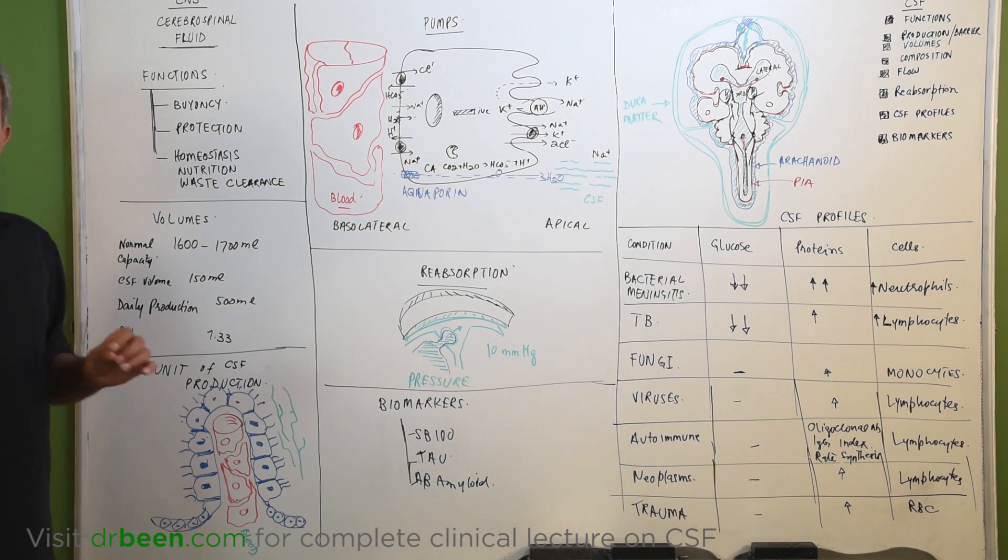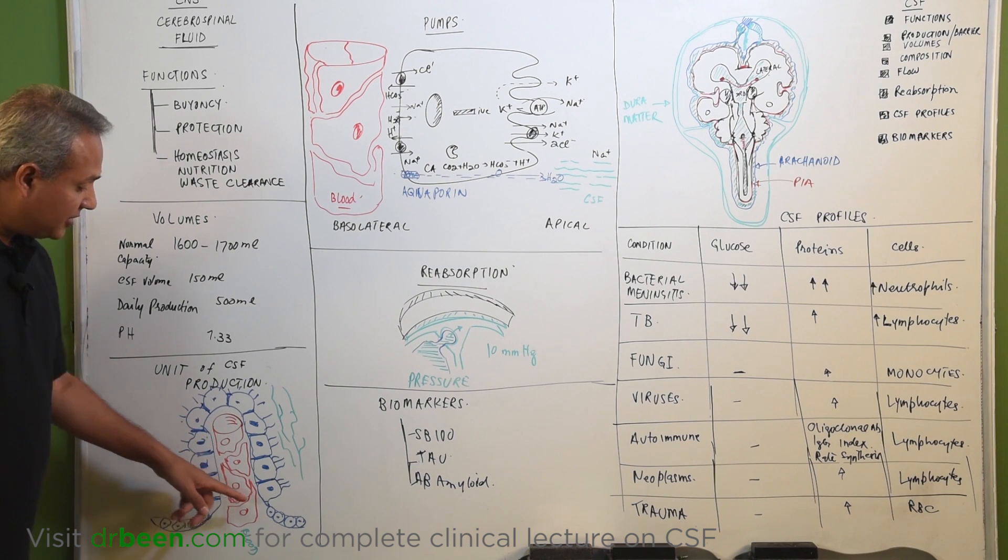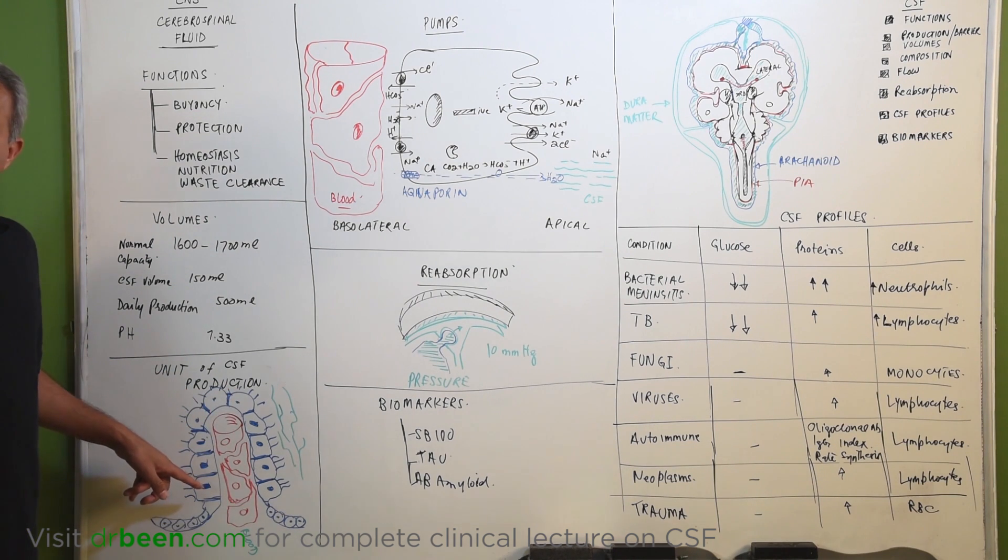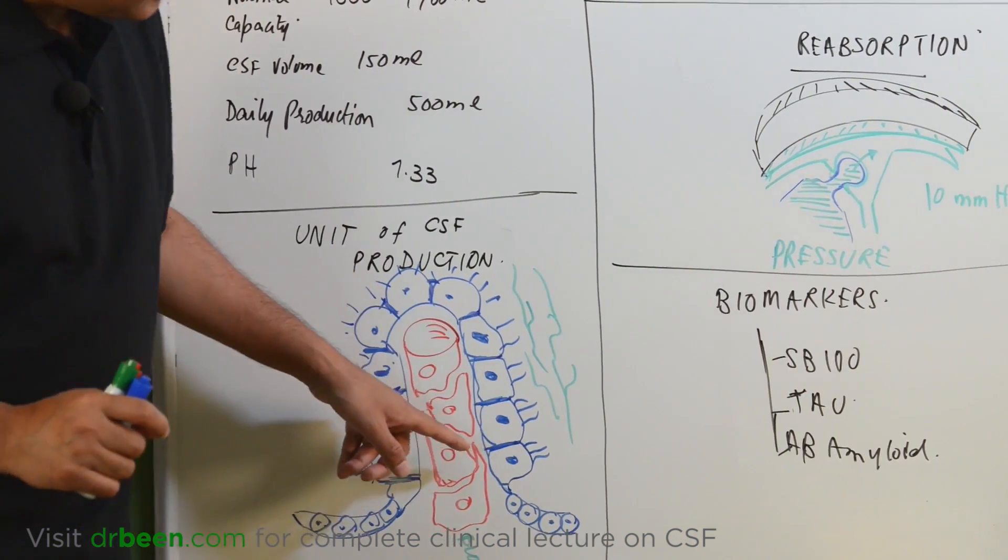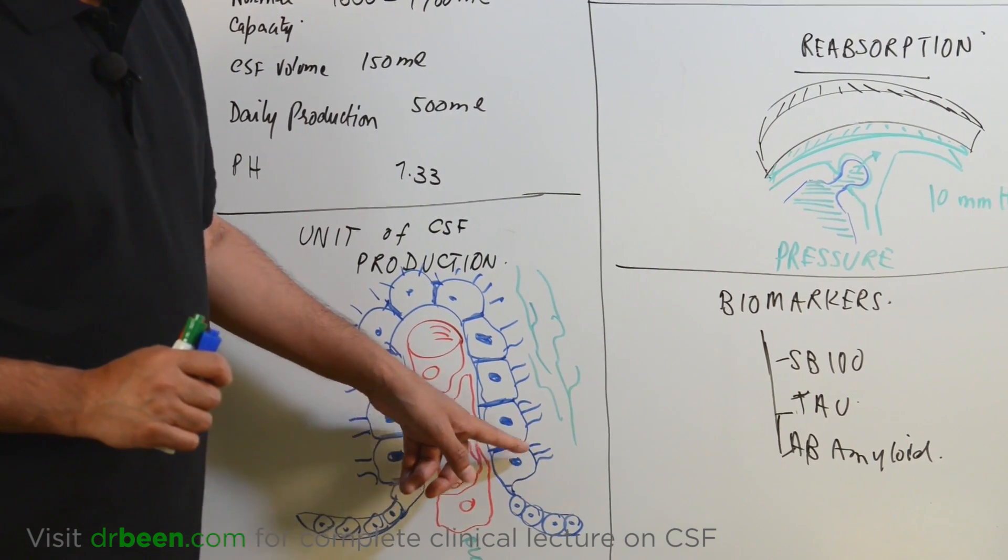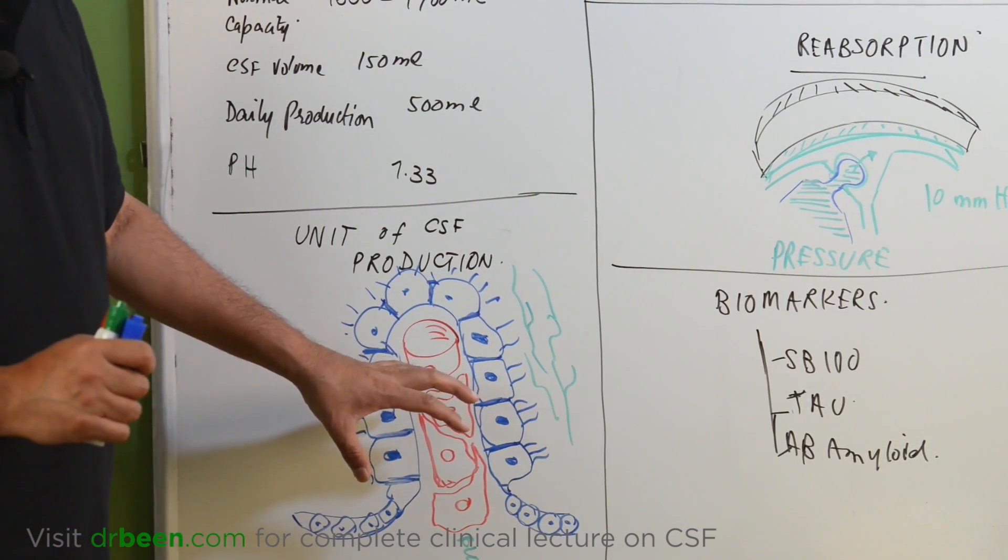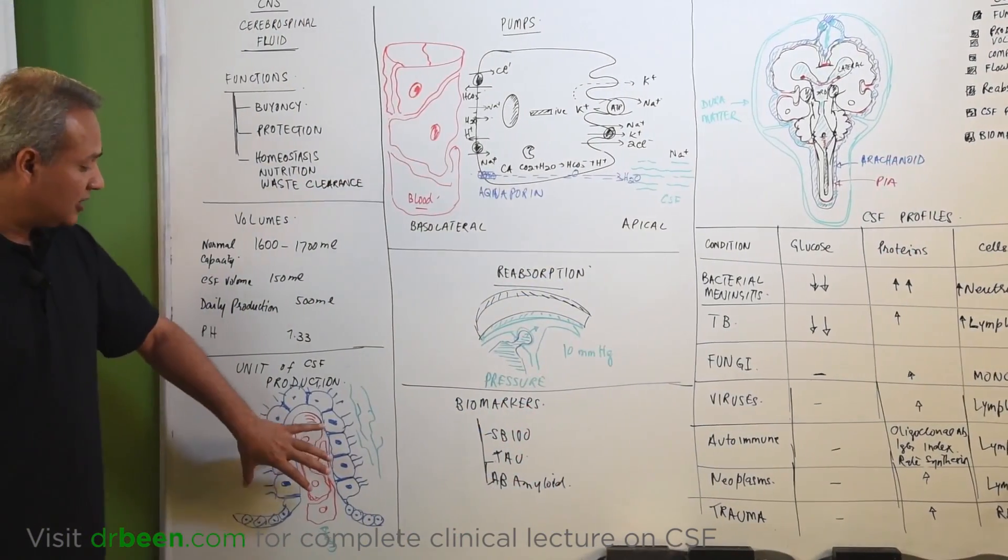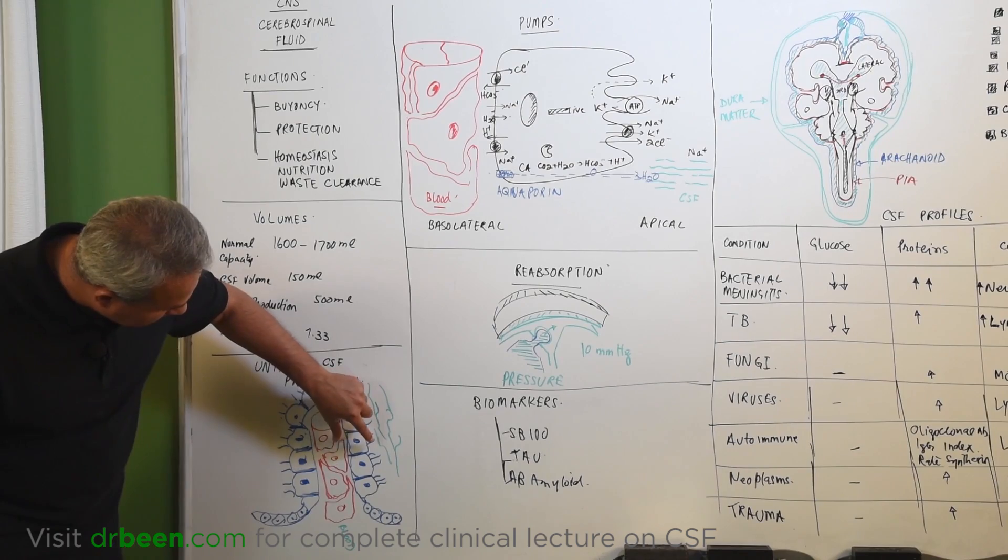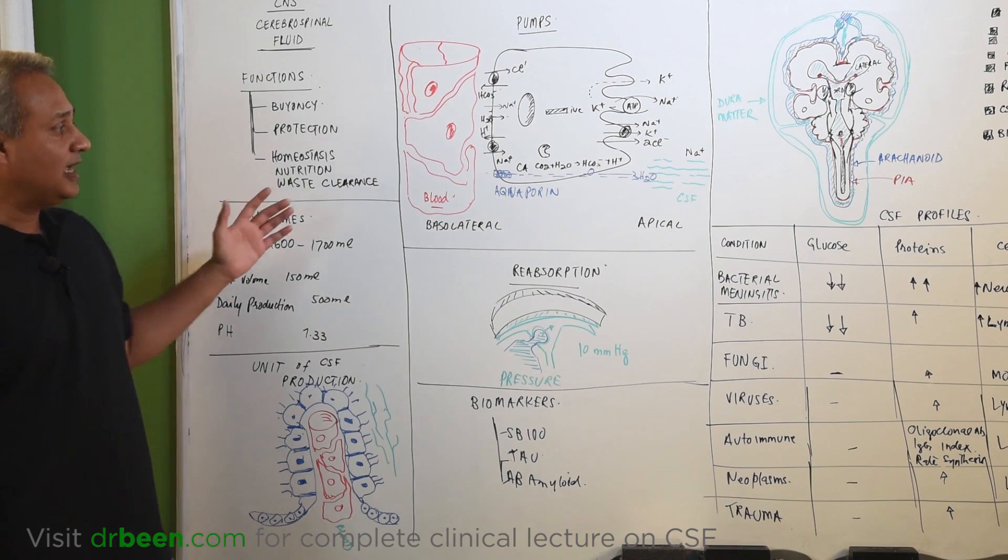Now, let us look at the production of the CSF. First of all, let us look at the unit of the CSF production, just like a nephron in the kidney. Here is a unit. How that unit looks like? This is a capillary. Capillary has the ependymal cells, which are the epithelial cells of the ventricular cavities. Ependymal cells become specialized when they come around the capillaries. They become cuboidal and they have cilia on them. This structure is called the unit for the CSF production or unit of the choroid plexus. Many such structures form the choroid plexus.